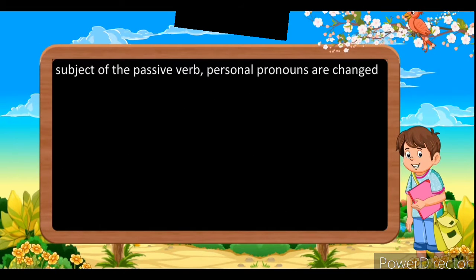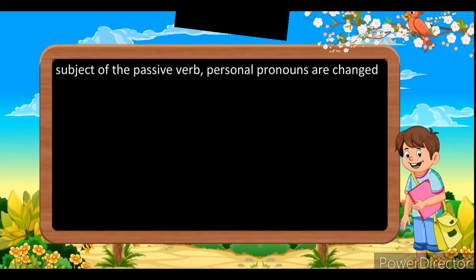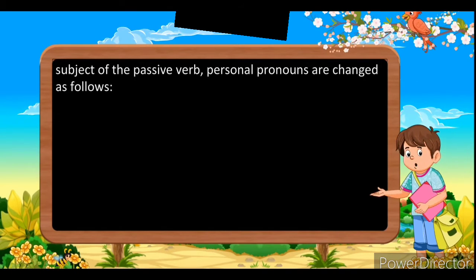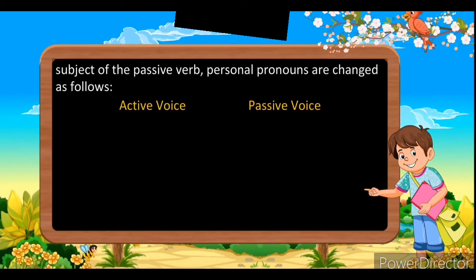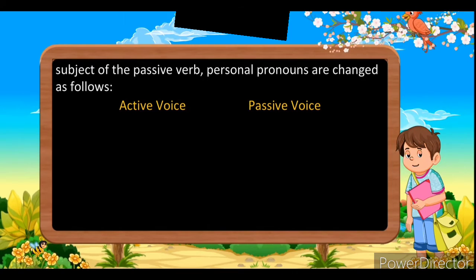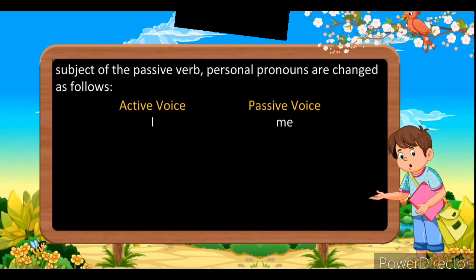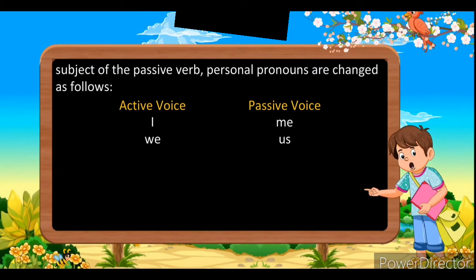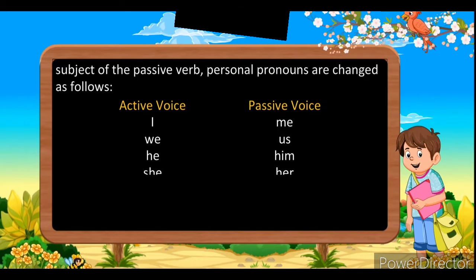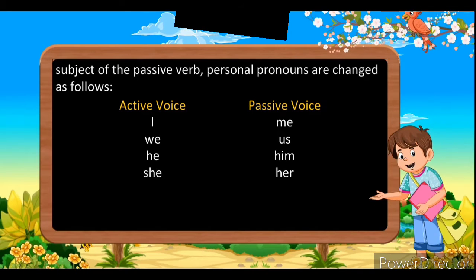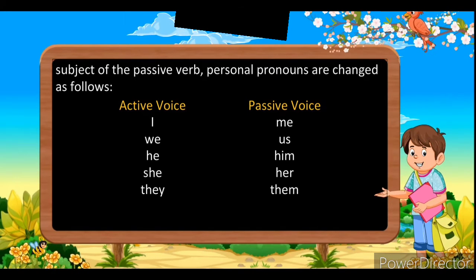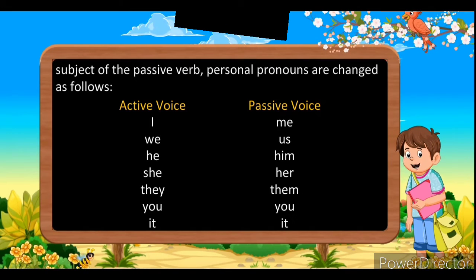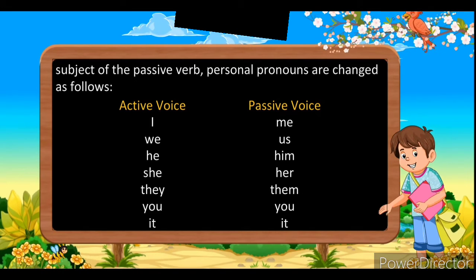Third rule: while changing the object of the active voice into the subject of the passive voice, personal pronouns are changed. In active voice, if there is 'I', change it to 'me'; 'we' into 'us'; 'he' into 'him'; 'she' into 'her'; 'they' into 'them'; 'you' stays 'you'; and 'it' stays 'it'.